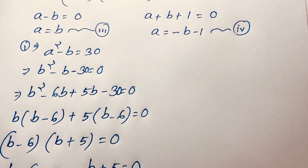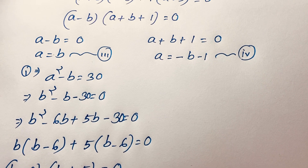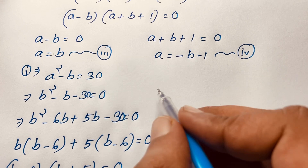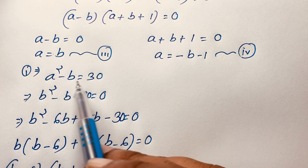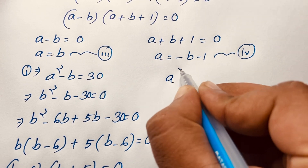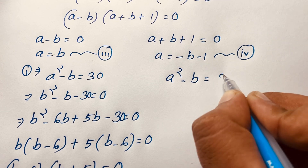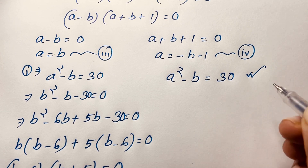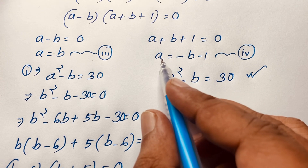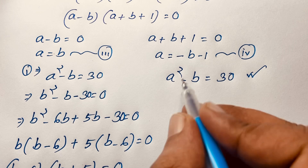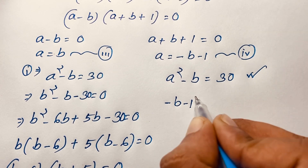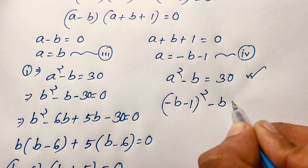But in Case 2, look here: A plus B plus 1 is equal to 0. We will find out A is equal to negative B minus 1. Recall our first equation: A squared minus B is equal to 30. I take this equation again, so it will be A squared minus B is equal to 30. Now I know that A is equal to minus B minus 1, so I take this value here, and this equation becomes: minus B minus 1, whole to the power 2, minus B is equal to 30.